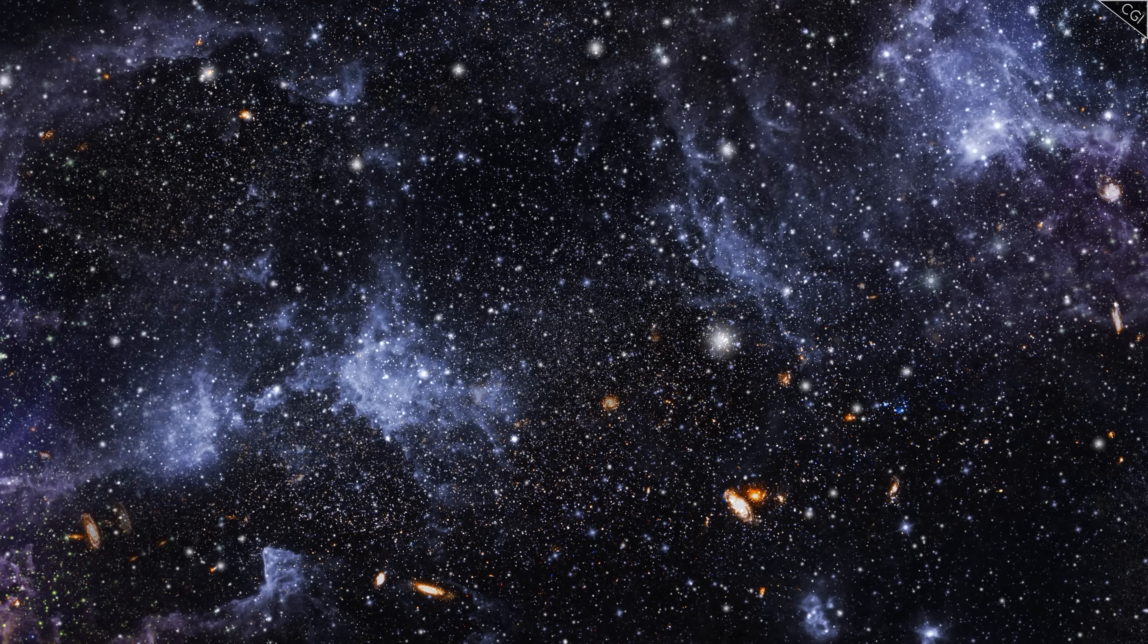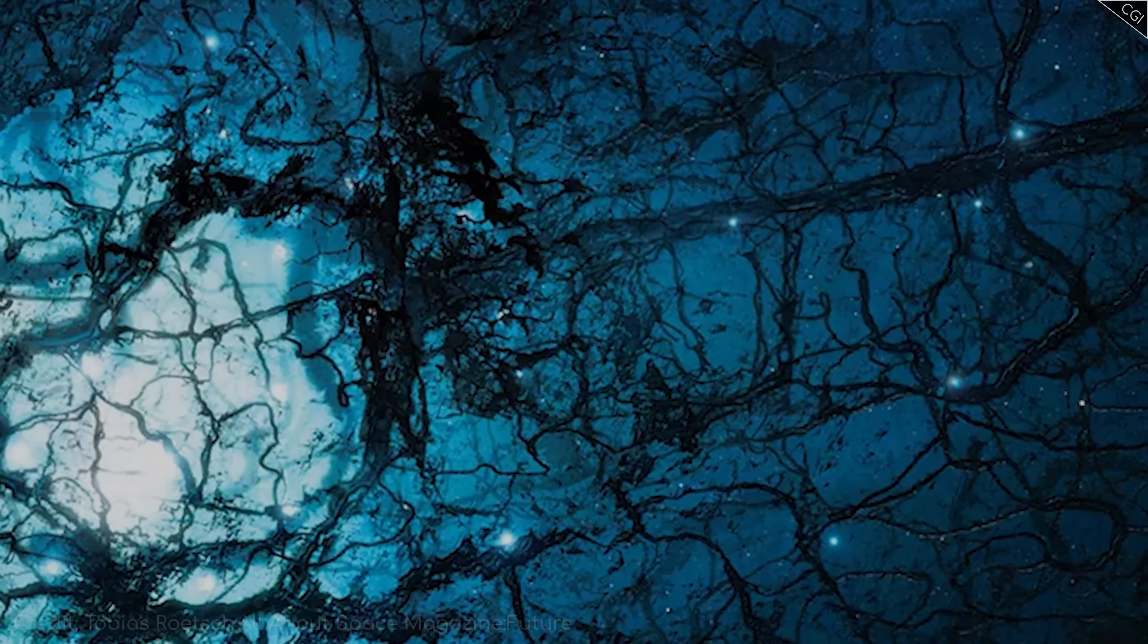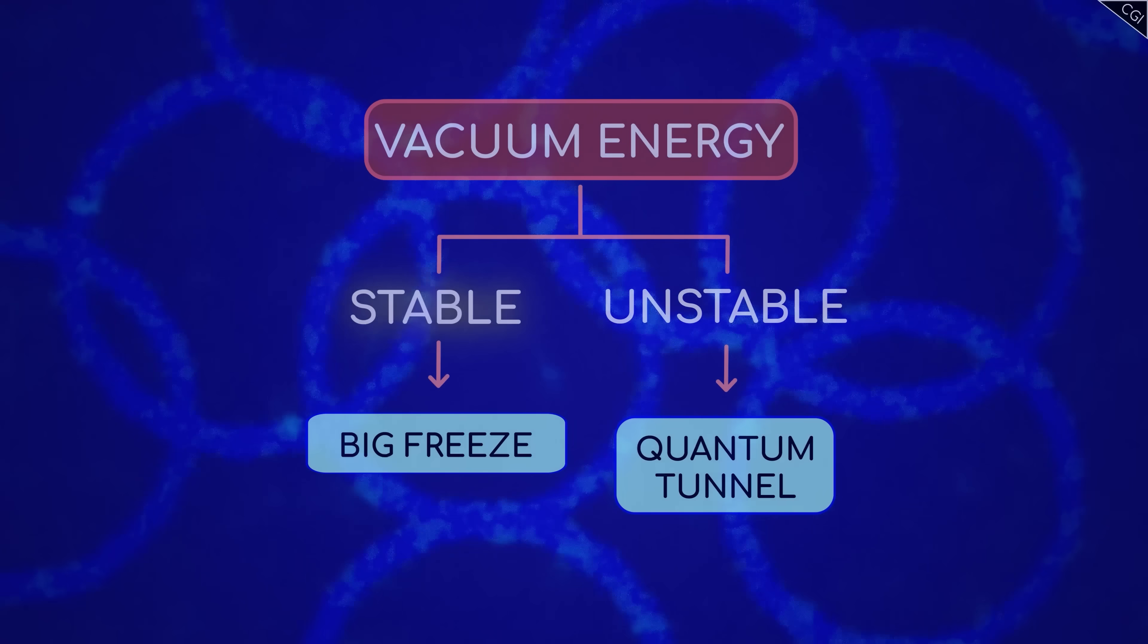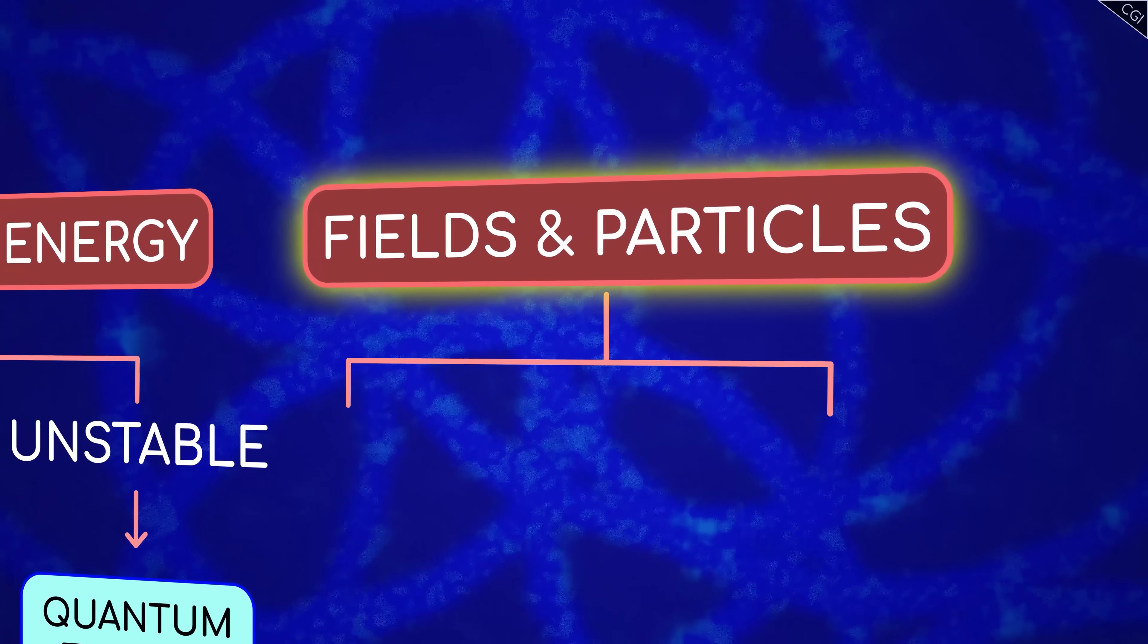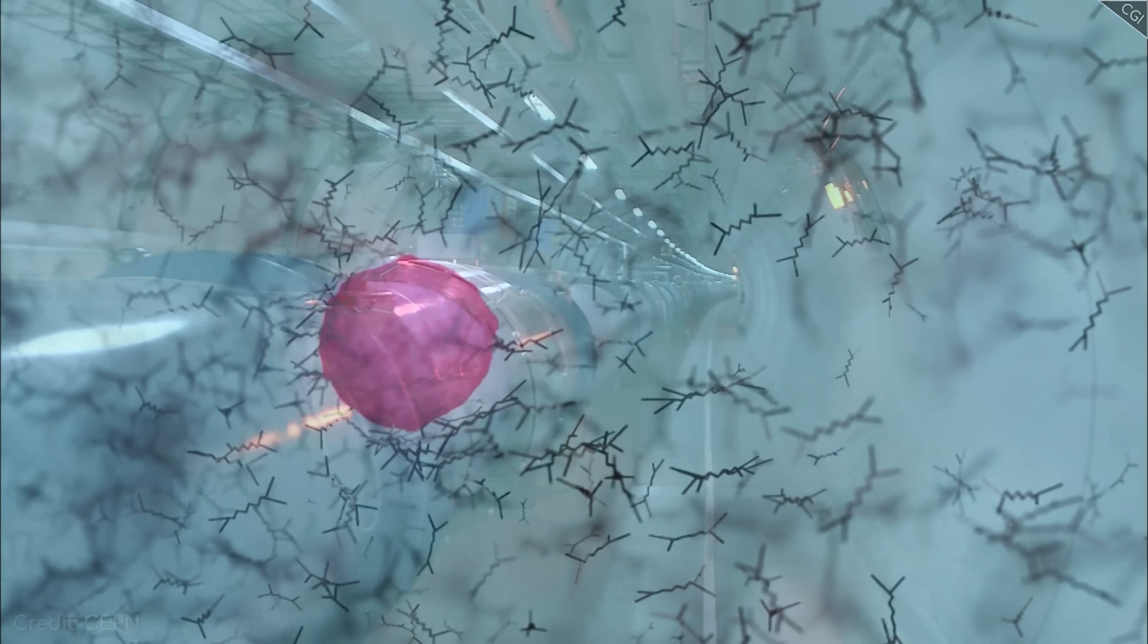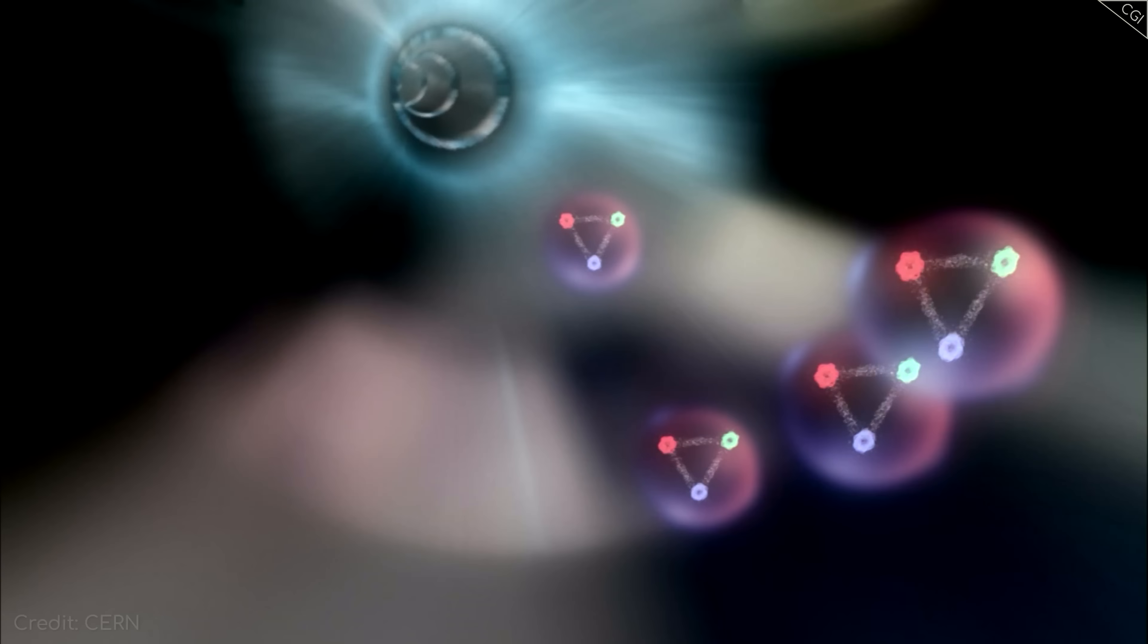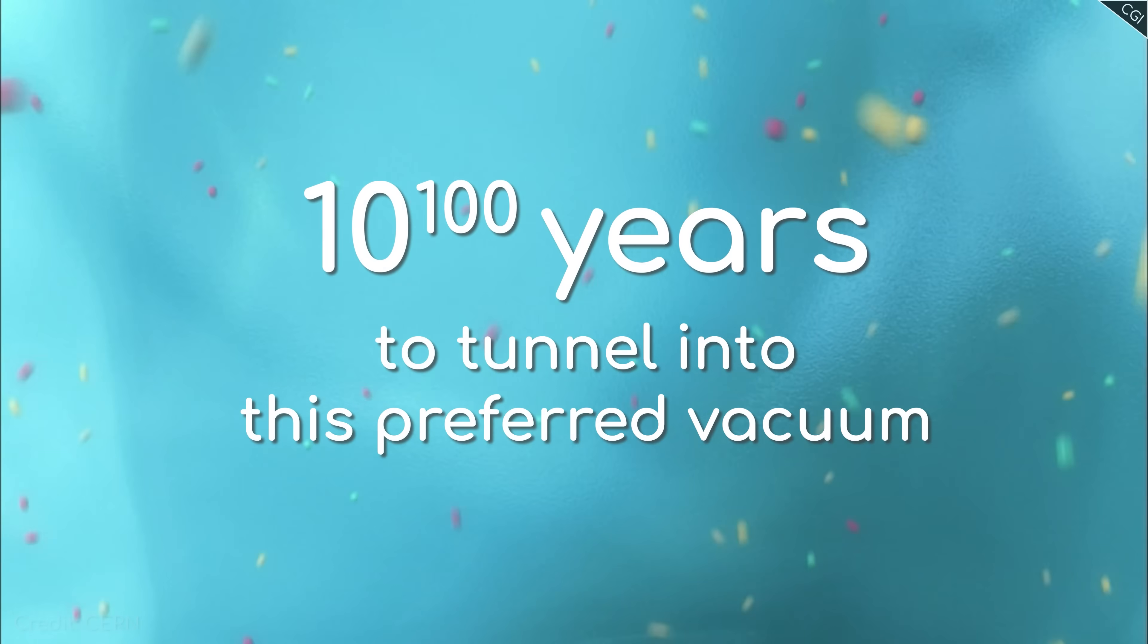If the idea of a Big Freeze scares you, I got some good news and some bad news. The good news is that there are reasons to believe that even if dark energy comes from the vacuum, that vacuum state might not last forever, meaning we might not be headed towards a Big Freeze at all. One reason to doubt the stability of the vacuum comes from observation of the Higgs field. Current measurements from CERN indicate that the Higgs might have a lower energy vacuum state than the one we live in, though it could take something like 10 to the power 100 years to tunnel into this preferred vacuum.